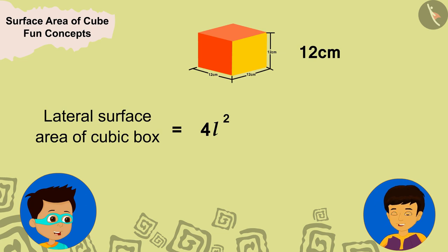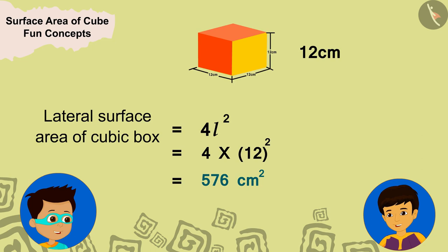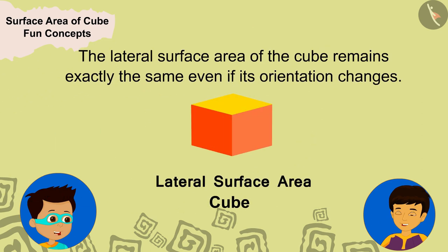This means that even in this orientation of the box, its lateral surface area will still be exactly 576 square centimeters. Now do you believe me, Thomas? Yes, Manas, now I get your point that the lateral surface area of the cube remains exactly the same even if its orientation changes.